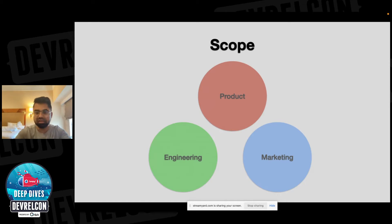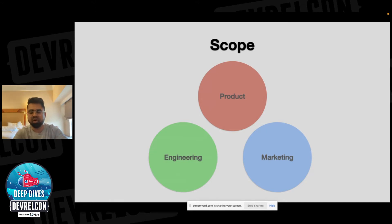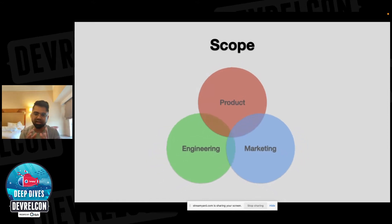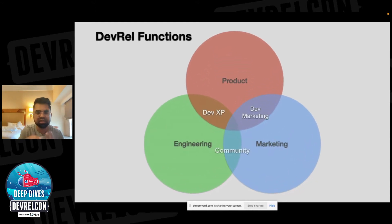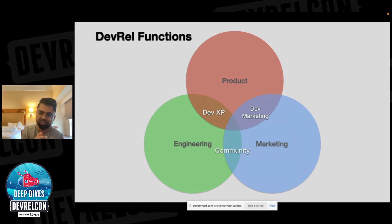Considering all three of these verticals overlap, what emerges are three things: developer experience, developer marketing, and community. The product and engineering overlap creates developer experience. The product and marketing overlap creates developer marketing. And the engineering and marketing overlap creates community. DevRel sits across these overlaps depending on which teams you work with and who you report to — whether it's the CEO, CTO, or marketing.